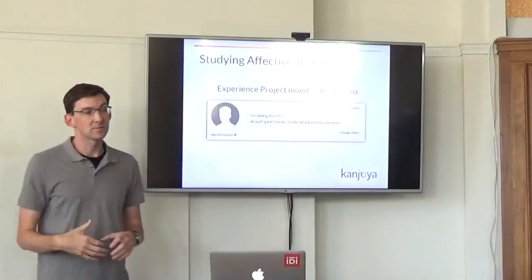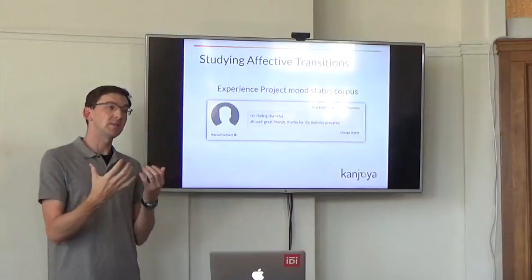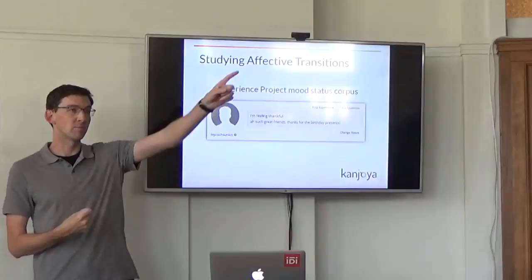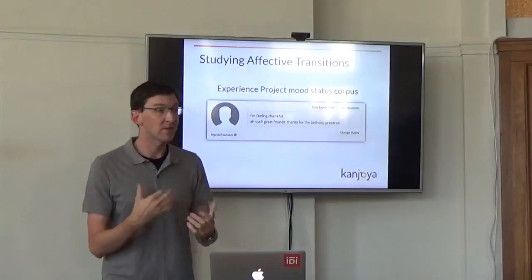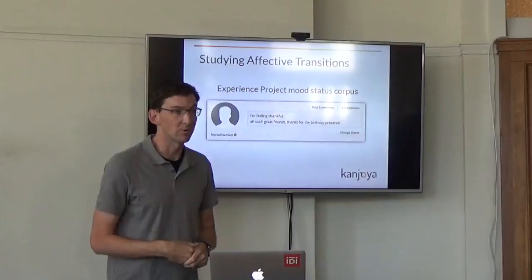So for our experiments, that's what we did. The data set that we were using is this very large collection of mood updates from the social networking site, The Experience Project, which is associated with Canjoya, which is a company just up there. Here's an example update. It says, I'm feeling thankful. For us, thankful is the label there, the mood update. And then it says, ah, such great friends. Thanks for the birthday presents. So we'll use the text surrounding that label, thankful, to predict that mood.